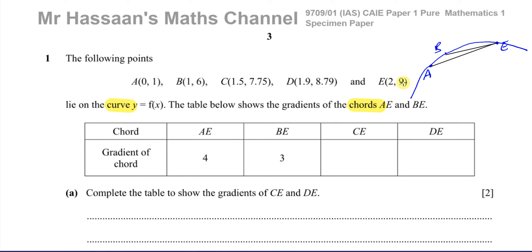You can confirm that. The gradient of a point is the change in Y, which is 9 minus 1, over the change in X, which is 2 minus 0. That's 8 over 2, which is 4 and so on.